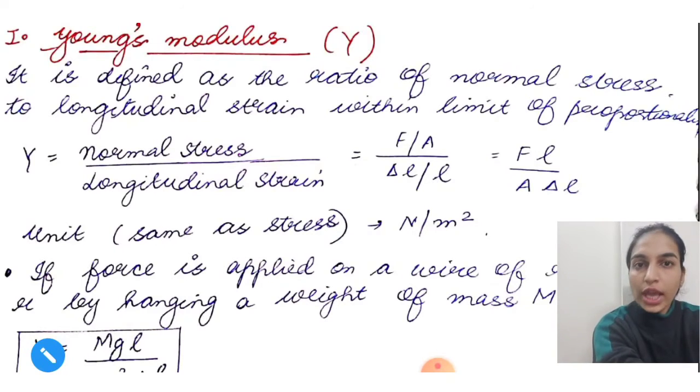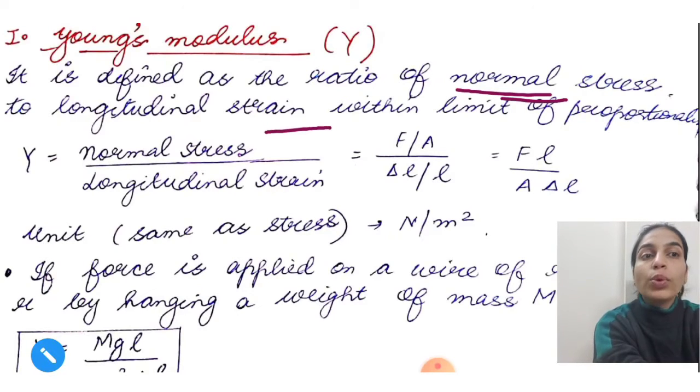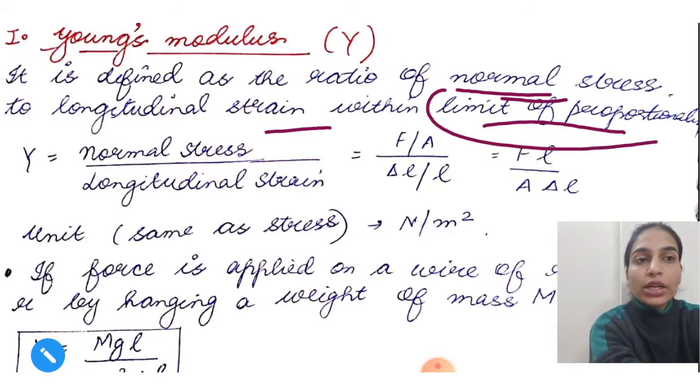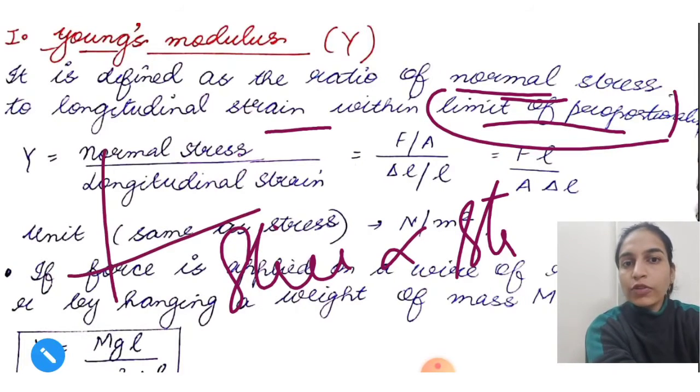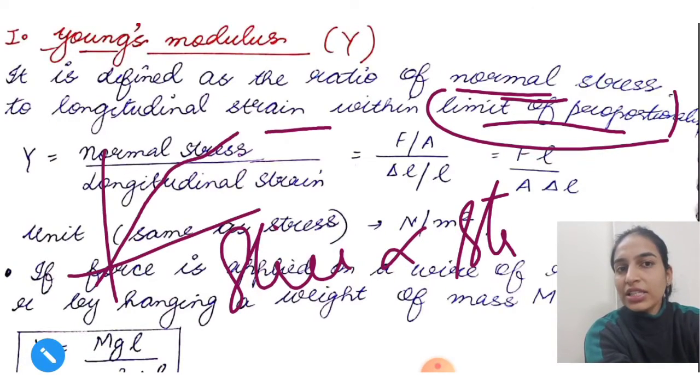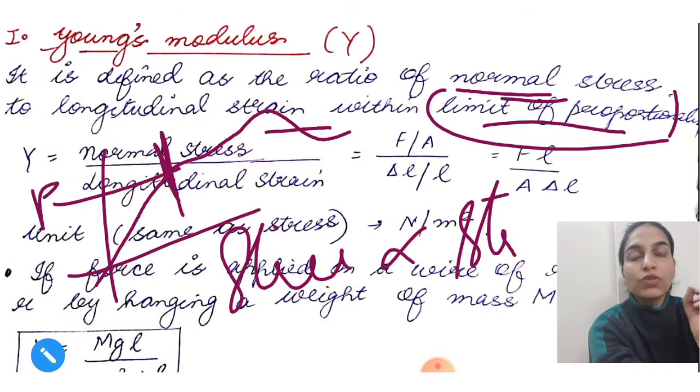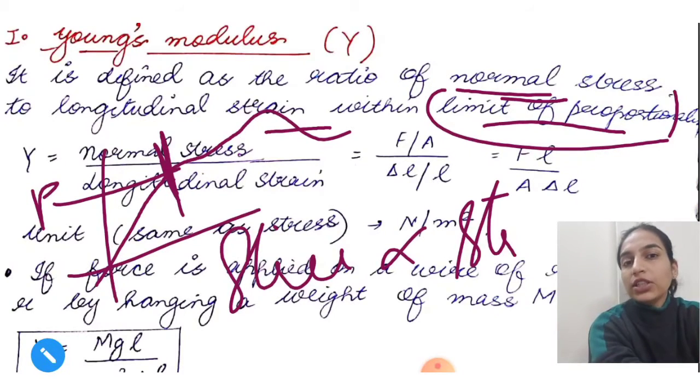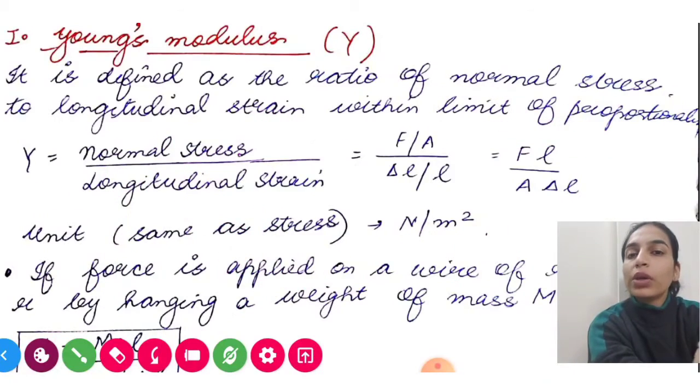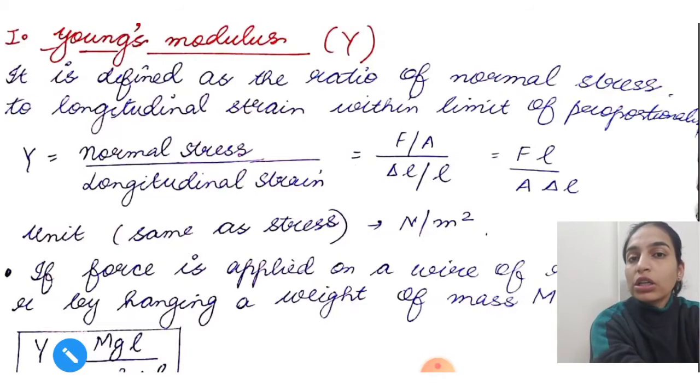When length-related stress and length-related strain occur, the constant that comes out will be Young's modulus. So it is defined as the ratio of normal stress to longitudinal strain within the limit of proportionality. This is important to write because we know that stress is directly proportional to strain when following Hooke's law. When we drew the curve, there was a straight line, then it curved. That point P was your limit of proportionality, and that's where Hooke's law was being followed.